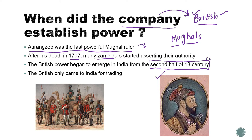In the second half of the 18th century, they started emerging their power. The British only came to India for trading at first — not to conquer. But slowly, when they had the opportunity to trade, they saw that India was a country where they could get a lot of profit. India was number one in trading, and they thought that if they conquered it, they would have profits and profits. So first they came for trading, watched what was happening in India, observed who was weak and who was strong, and then decided to conquer India — in the second half of the 18th century.